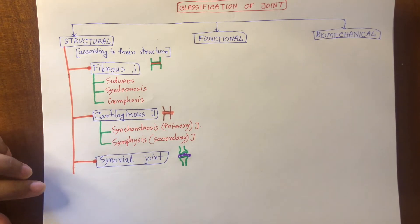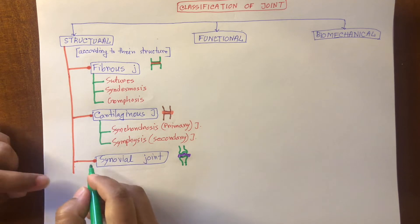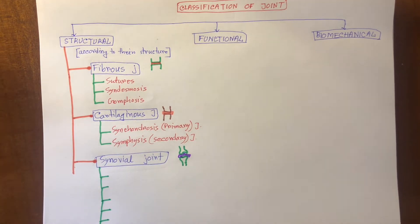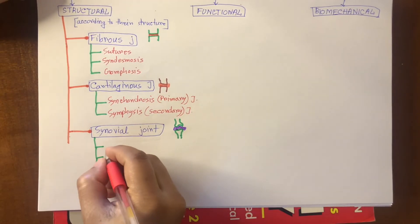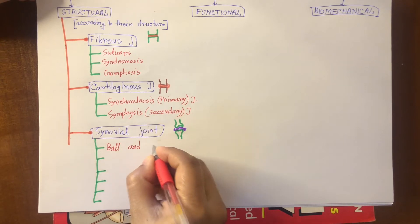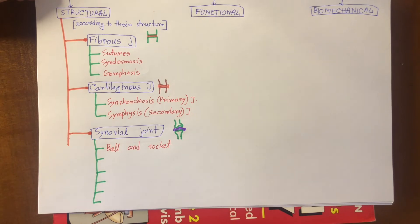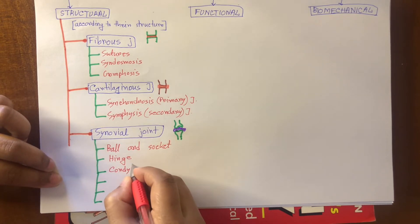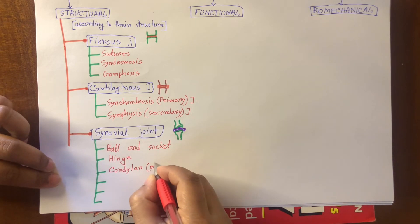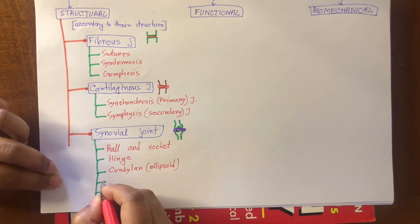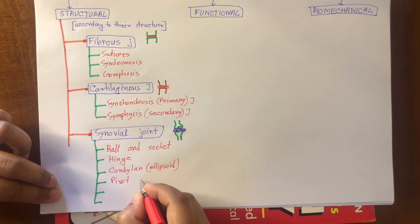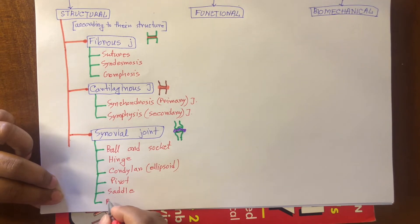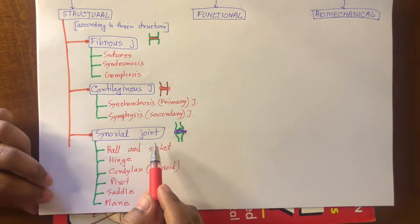Synovial joints can be sub-classified into six types. These are: ball and socket joint, hinge joint, condylar joint — which is also known as ellipsoid joint — pivot joint, saddle joint, and plane joint. So these are the synovial joints.